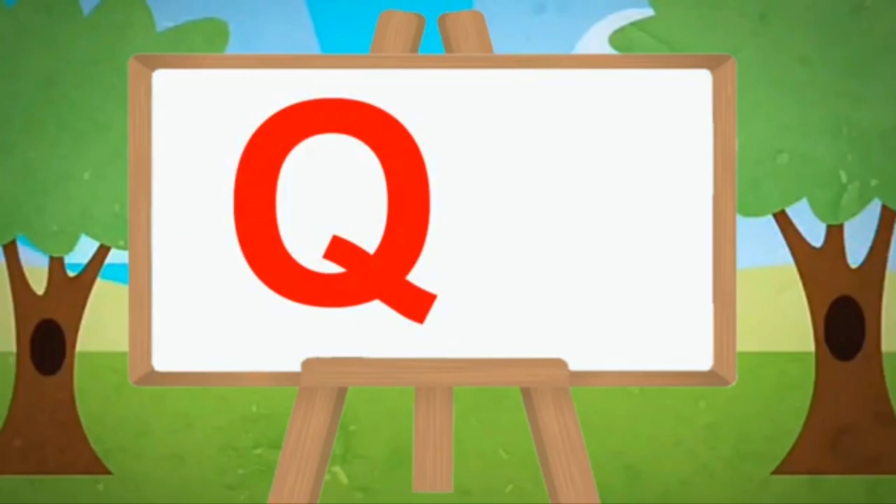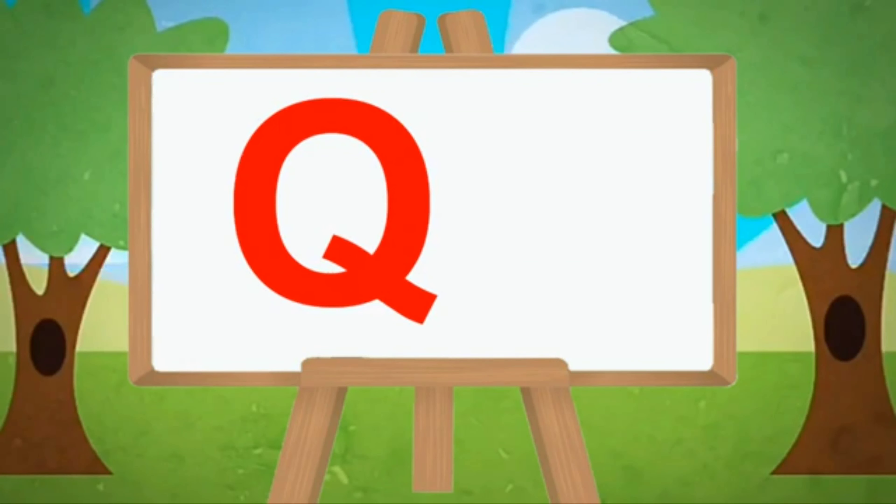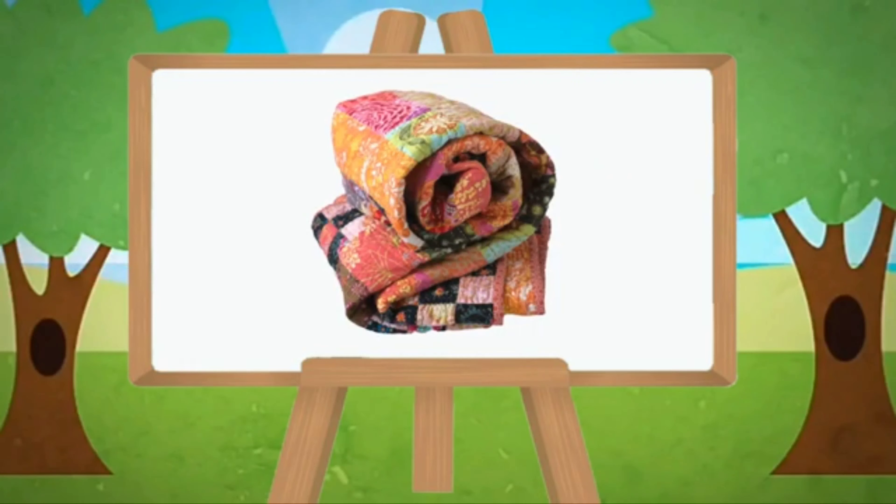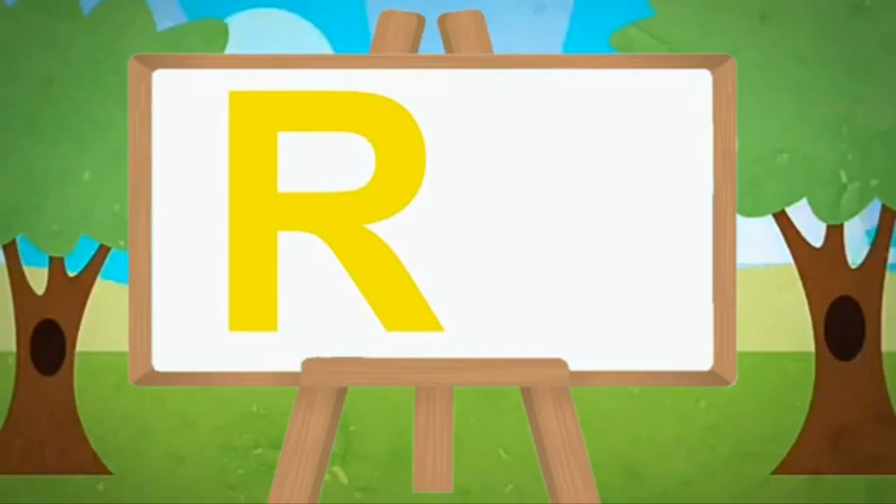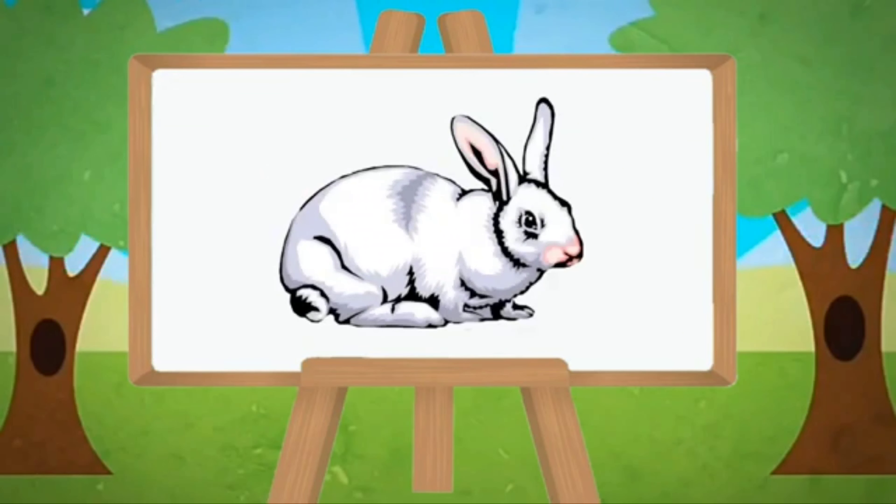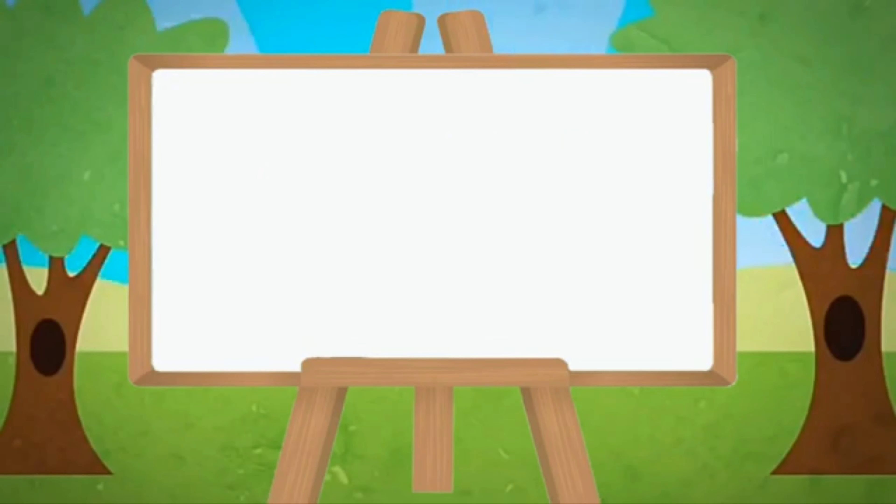Capital Q, small q. Q for queen, Q for quilt. Capital R, small r. R for ribbon, R for rabbit.